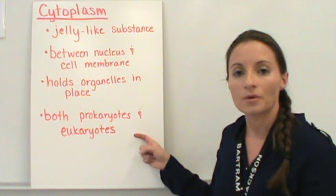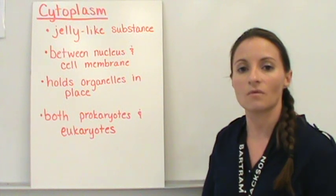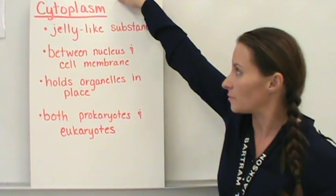Cytoplasm is located in both prokaryotes and eukaryotes. So this is one of those things that's going to be in every single cell no matter what it is. It will have cytoplasm.